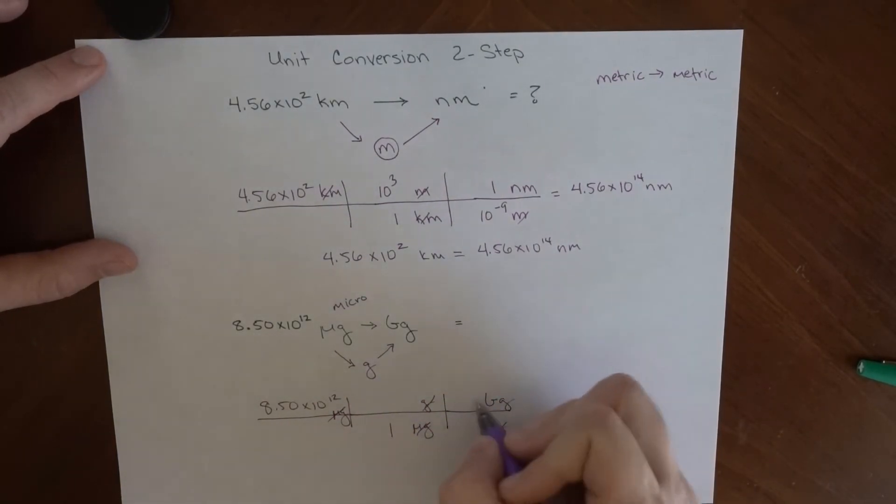Wherever my metric prefixes are, I'm going to put a 1. And whatever the metric prefix means, here this means 10 to the minus 6, that's going to go up here. And giga means 10 to the 9.